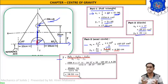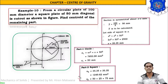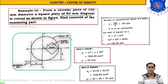Now let us start Example 10: from a circular plane of 100 mm diameter, a square plate of 50 mm diagonal is cut out as shown in the figure. This is the circle of 100 mm diameter and the square to be cut out has a diagonal of 50 mm.